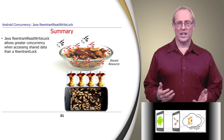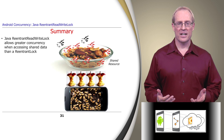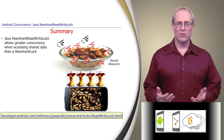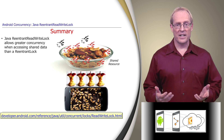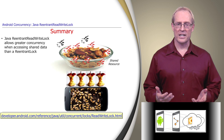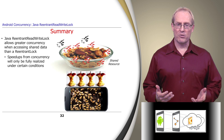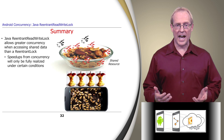In summary, a Java ReentrantReadWriteLock allows greater concurrency when accessing shared data than a ReentrantLock. ReentrantReadWriteLock exploits the fact that while only a single writer thread can modify the shared data at a time, often any number of reader threads can concurrently examine the data. However, speedups from ReentrantReadWriteLock will only be fully realized on a multi-core or multi-processor system, and then only if the access patterns for shared data are suitable.